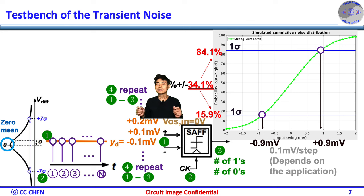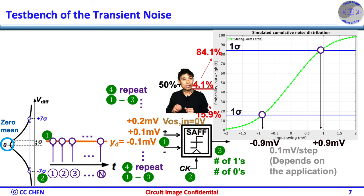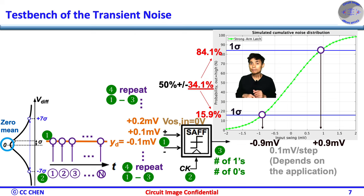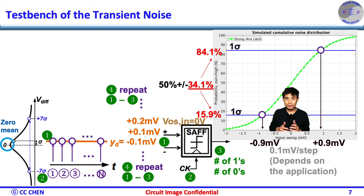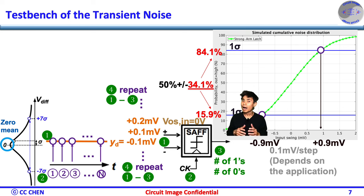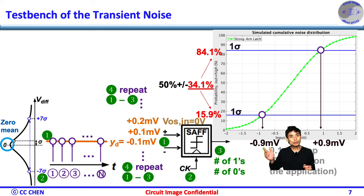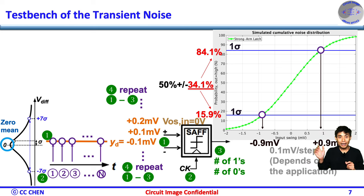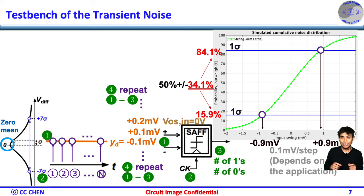After sweeping all the VD values at 0.1 mV per step, we should be able to complete the probability cumulative distribution function CDF of output logic 1 versus the input swing. Lastly, we can identify the RMS noise value easily by looking at the probability equals 84.1% or 15.9% on each side to map the input-referred noise. You will see either +0.9 mV or −0.9 mV, showing us the input-referred noise RMS is 0.9 mV. Note that we only apply 0.1 mV per step in this case study to save simulation time; if your expected noise value is very small, you might need to reduce the step size, and vice versa.